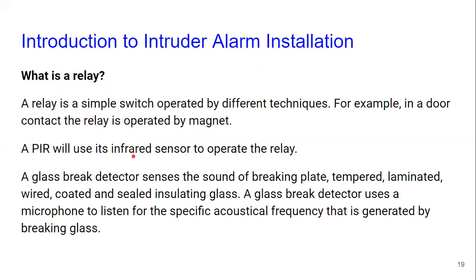A relay is a simple switch operated by different techniques. In a door contact, the relay is operated by a magnet. In a PAR, the relay is operated by heat generated by an object. For a glass break detector, the relay is operated by the frequency — the noise you get from smashing glass. There are different ways to operate a relay.